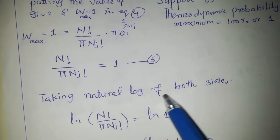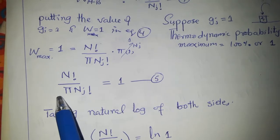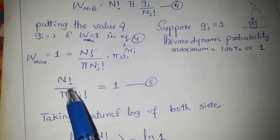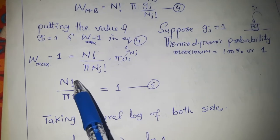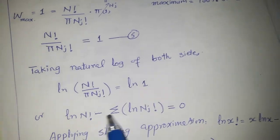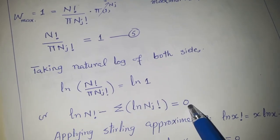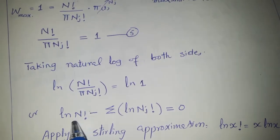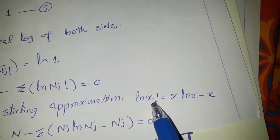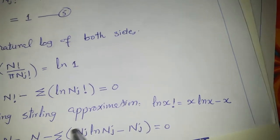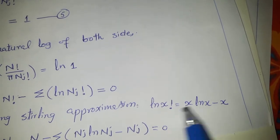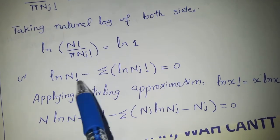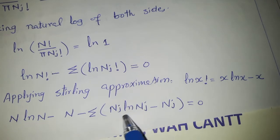Taking the natural log of both sides, we use the logarithm rule that the product sign is converted to a summation sign, and log of 1 equals 0. Applying Stirling's approximation to solve the factorial term — the formula is: log(x!) = x·log(x) − x. Substituting, we get N·log(N) − N for the N factorial term, and similarly for the nj factorial terms.